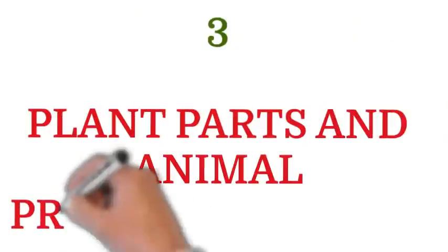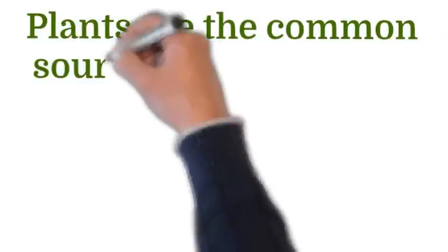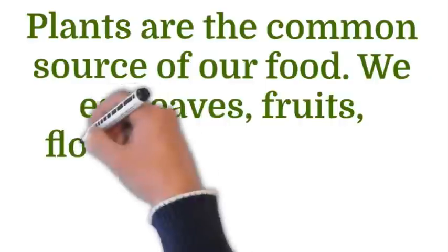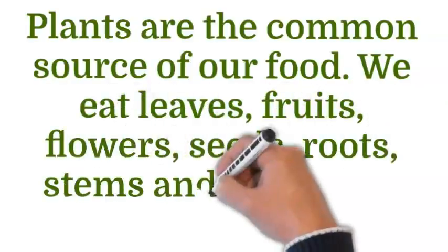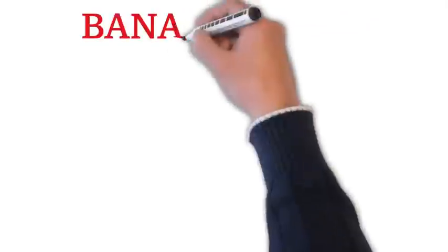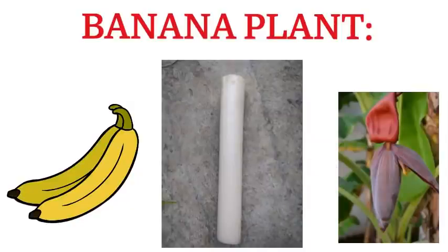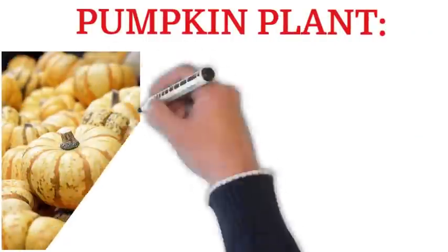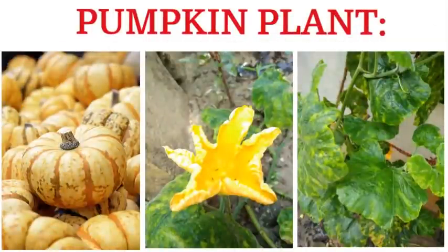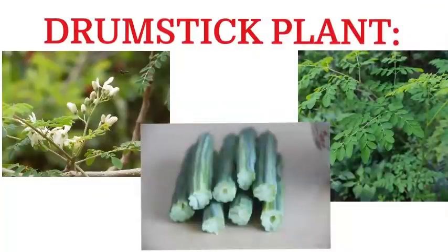The next heading is Plant Parts and Animal Products as Food. Plants are a common source of our food. We eat leaves, fruits, flowers, seeds, roots, stems and sprouts as well. The parts of a banana plant used for food are its fruits, flowers and stem. Parts of a pumpkin plant used for food are fruits, flowers and leaves. Parts of a drumstick plant used for food are leaves, flowers and fruits.